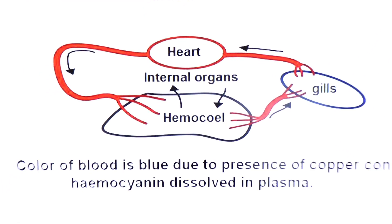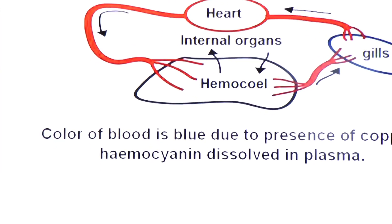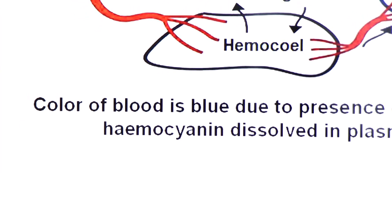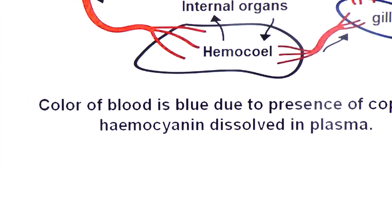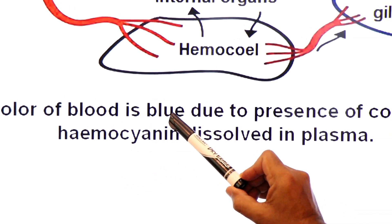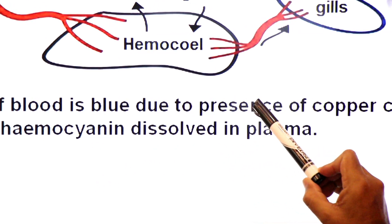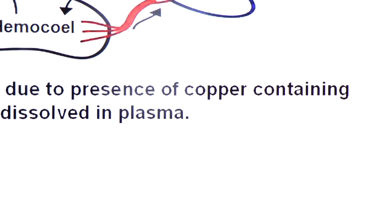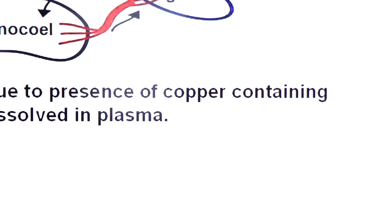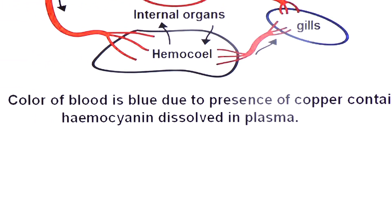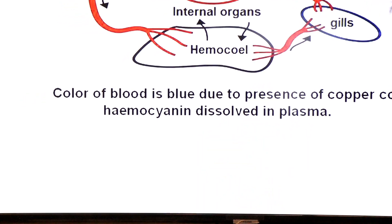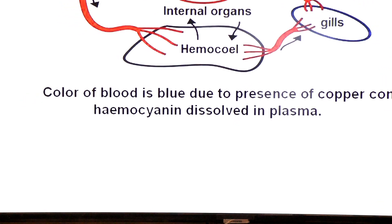The blood of Mollusca is blue in color due to the presence of copper-containing hemocyanin dissolved in plasma. Hemoglobin provides red color, while hemocyanin provides blue color.